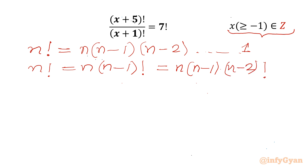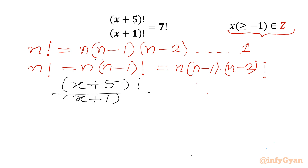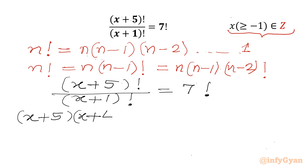Now let us apply both formulas to our equation. We write (x+5)! over (x+1)! equal to 7!. Expanding the numerator: (x+5) times (x+4) times (x+3) times (x+2) times (x+1)! over (x+1)!.